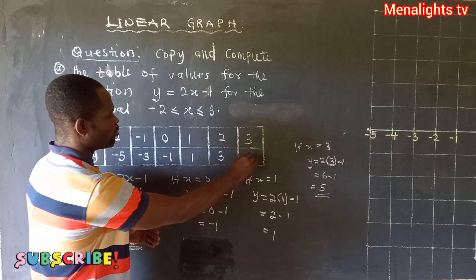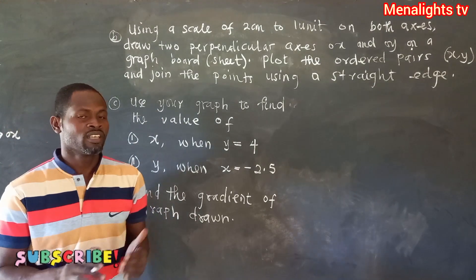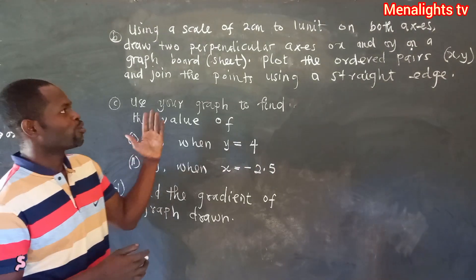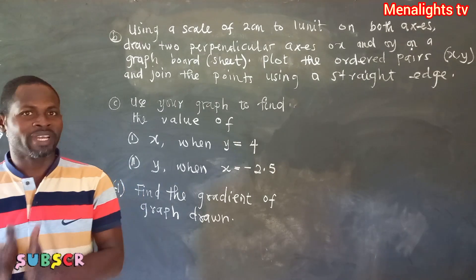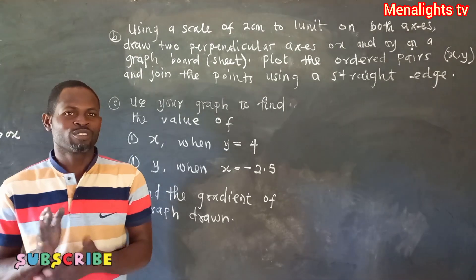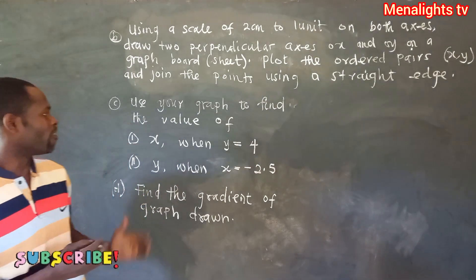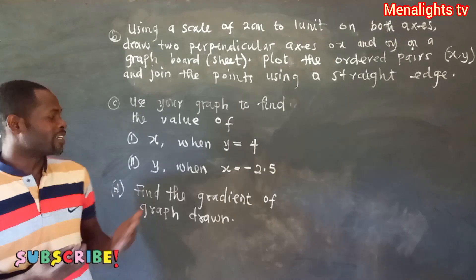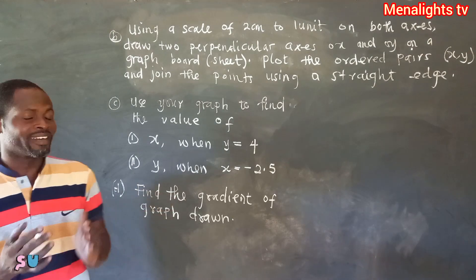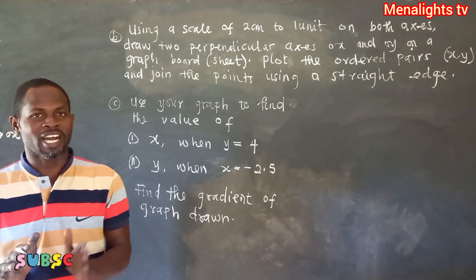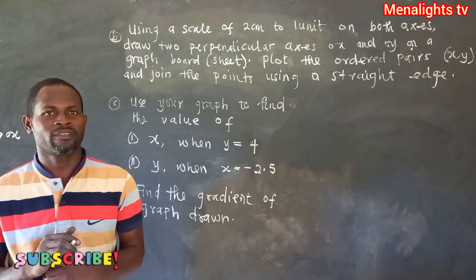Using a scale of 2 centimeters to 1 unit on both axes, draw two perpendicular axes OX and OY on the graph sheet. Then plot the ordered pairs and use a straight edge to draw a line through them. After that, use the graph to find the value of x when y = 4, find y when x = -2.5, and find the gradient of the graph.